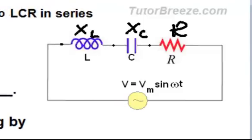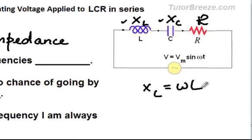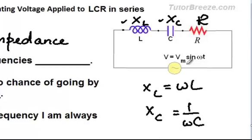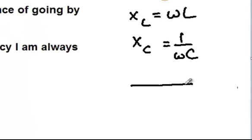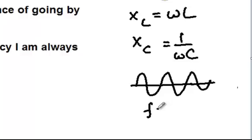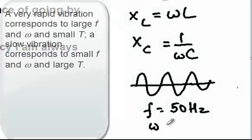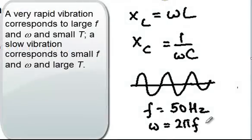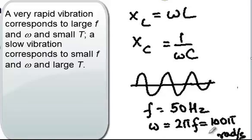Before we find the total impedance, a quick look at these quantities: the inductive reactance XL is given by omega times L, and the capacitive reactance Xc is 1 divided by omega C, where omega is the angular frequency of the alternating voltage. For example, if the frequency is 50 hertz, the angular frequency is 2 pi f, which equals 100 pi radians per second — it tells us how fast the voltage varies.